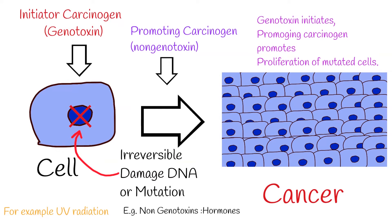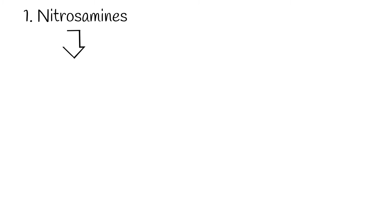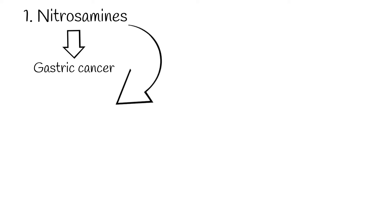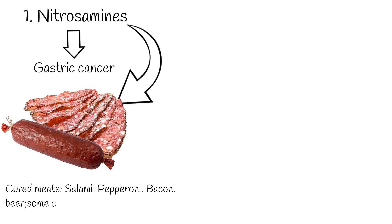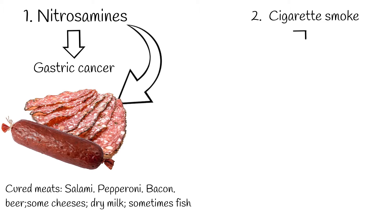We may have contact with carcinogens in everyday life. 1. Nitrosamines cause gastric cancer. Some foods contain nitrosamines, including cured meats like salami, pepperoni, and bacon, beer, some cheeses, non-fat dry milk, and sometimes fish.